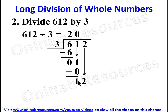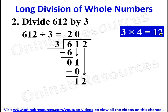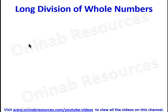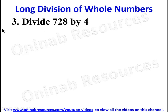Twelve divided by three — we see that three times four gives twelve, so twelve divided by three gives four. Four times three gives twelve, and subtracting twelve minus twelve gives zero. Therefore, six hundred and twelve divided by three gives two hundred and four. That is the solution to Problem 2.